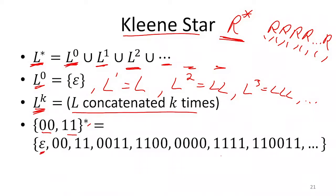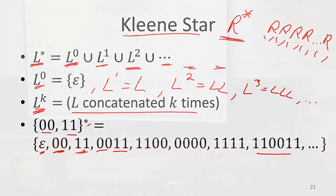I can get the empty string because that was L^0. I could get '00' because that belonged to L^1. I could get '11' because that also belonged to L^1. '0011' belonged to L squared. '110011' belonged to L cubed, and so on.